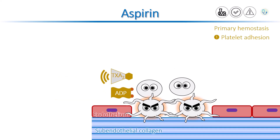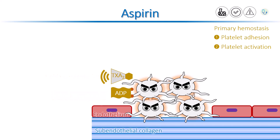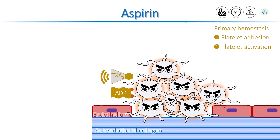They activate platelets, which also produce more ADP, thromboxane A2, and other chemical mediators. They make platelets stick to each other. This makes the platelet plug larger and larger as more and more platelets come to the site of injury and stick together. This phase is called platelet aggregation.